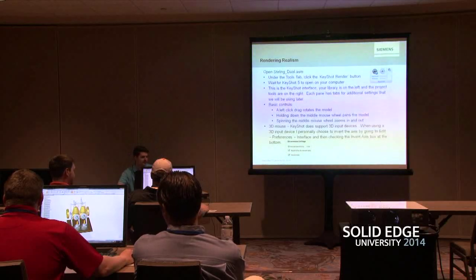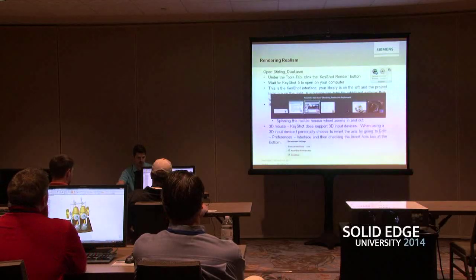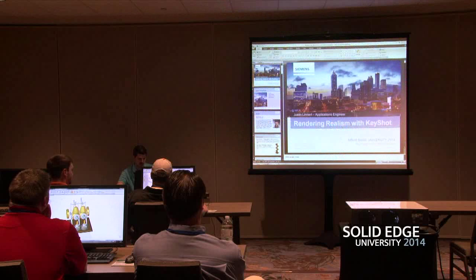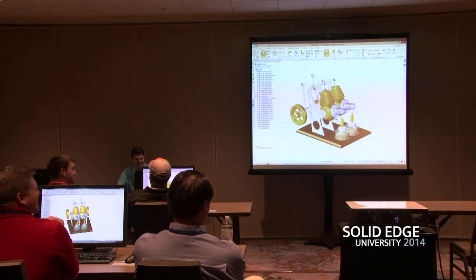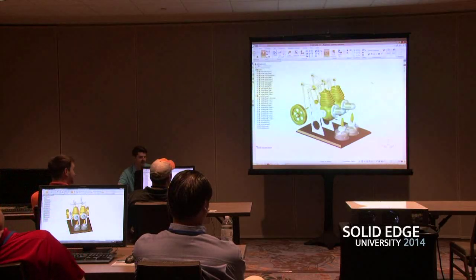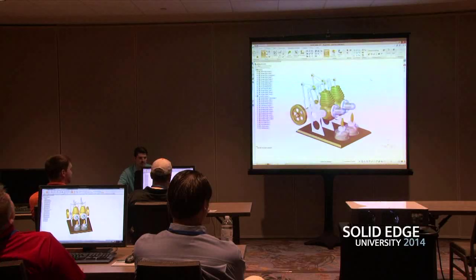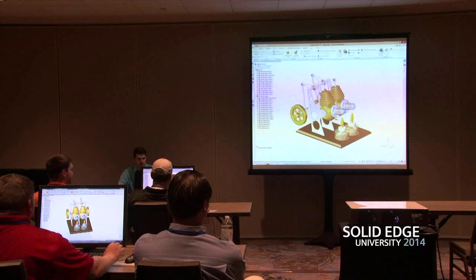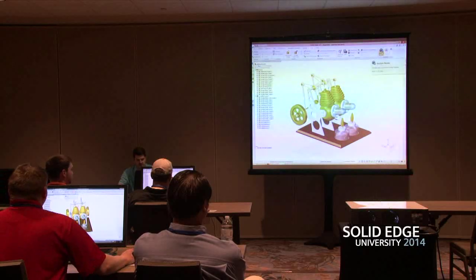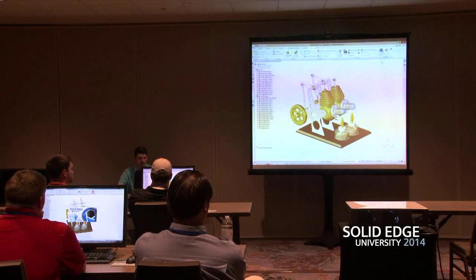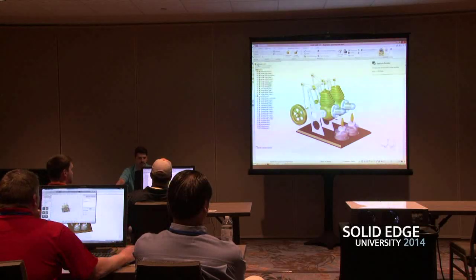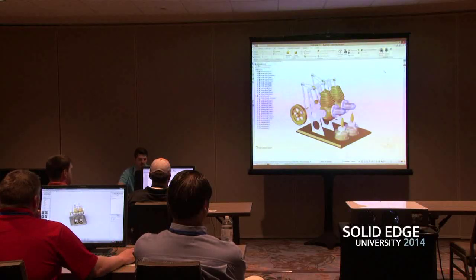There is a PowerPoint that details this pretty well, which you guys will get, but I'm just going to be mostly talking you through it. You should have something that looks like this. There are two ways to get this over to KeyShot: you can go to Tools, and we have a button called KeyShot Render. The other way is you can go into the ERA environment and there's a similar button that says KeyShot Render. They both do the same thing, so go ahead and click KeyShot Render and KeyShot should begin loading.